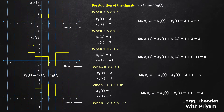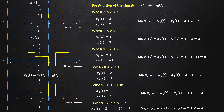Finally, when t is in [-2, -1], x1(t) = 2 and x2(t) = 2, so the resultant signal x3(t) = 2 + 2 = 4. So for t in [-2, -1], the value of x3(t) is equal to 4.